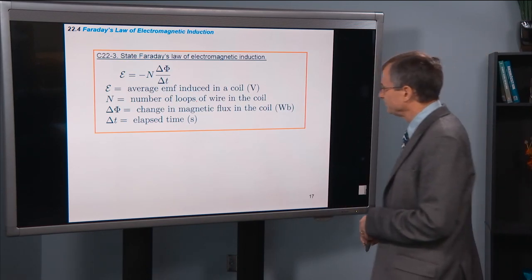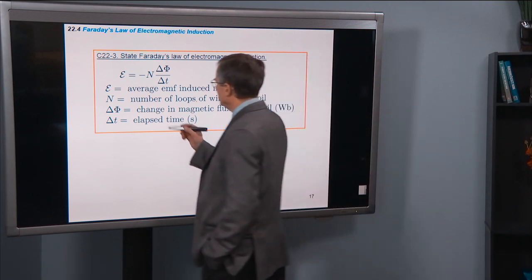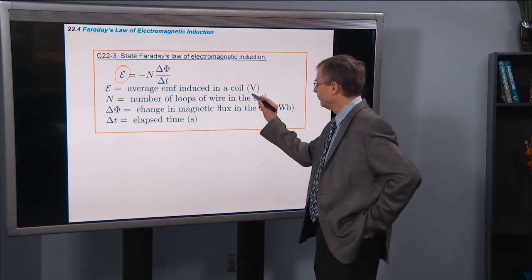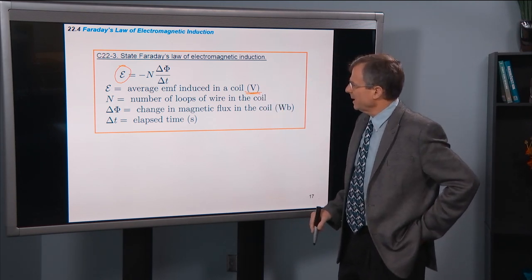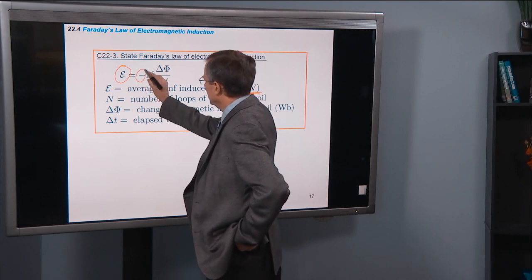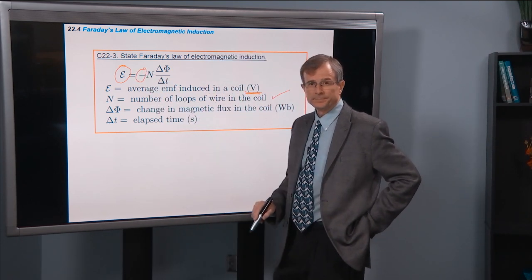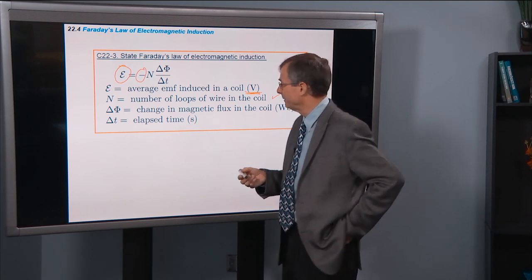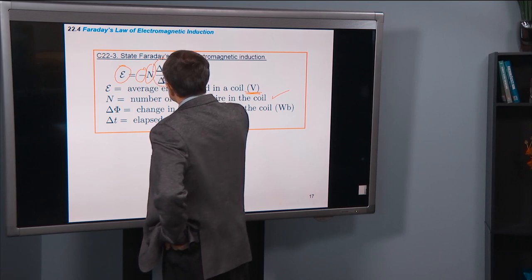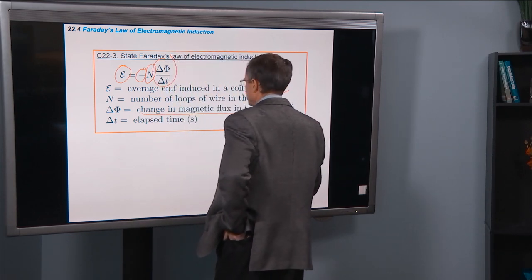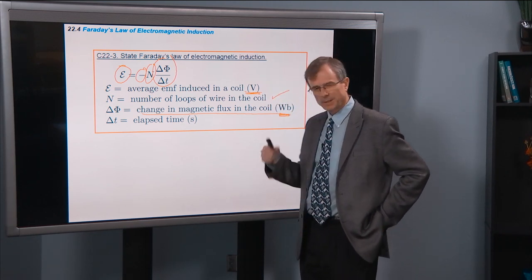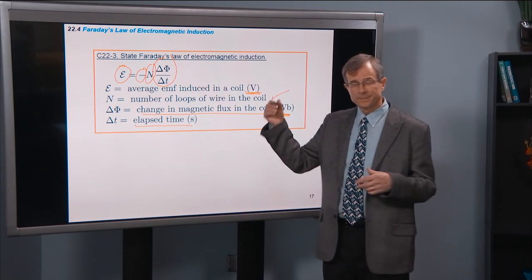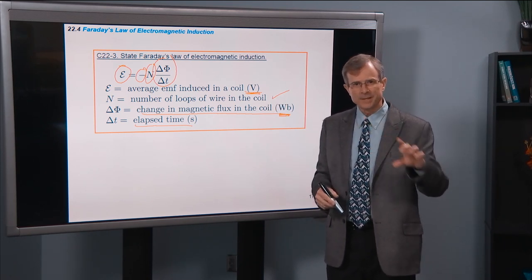And here is Faraday's law. It says that the EMF, average EMF induced in a coil, measured in volts. Remember an EMF is a voltage. That that EMF is equal to the negative of the number of loops of wire in the coil. So if you have just one circle of wire, then that N would be 1. If you have it wound around 10 times, N would be 10. That's N. That's N times the change in magnetic flux in the coil, measured in Webers, so we're talking about a change in this flux, divided by the elapsed time. So say that with me, E equals minus N, delta phi divided by delta T.